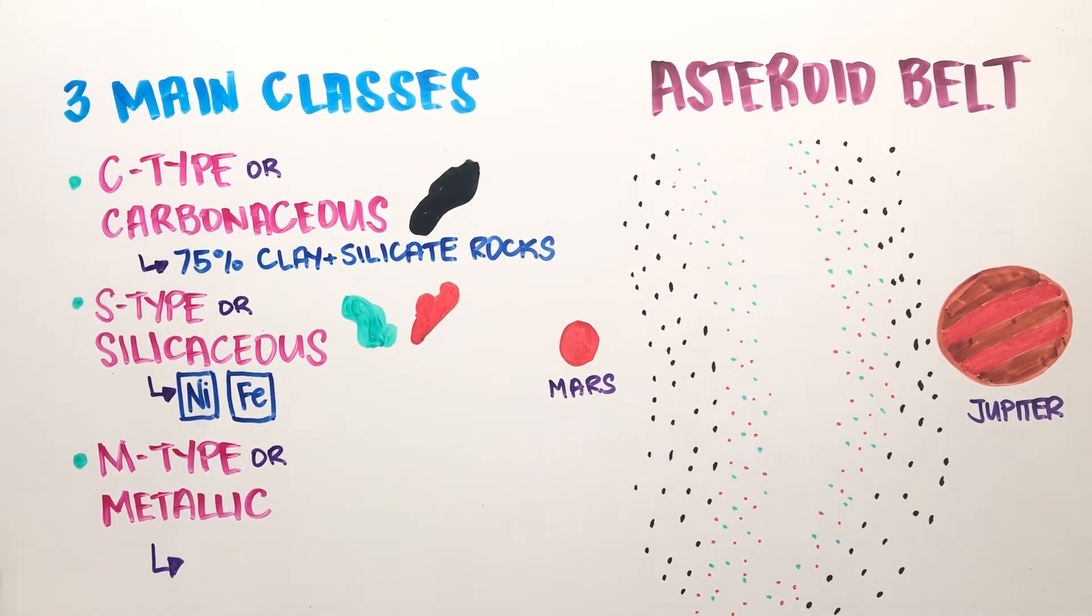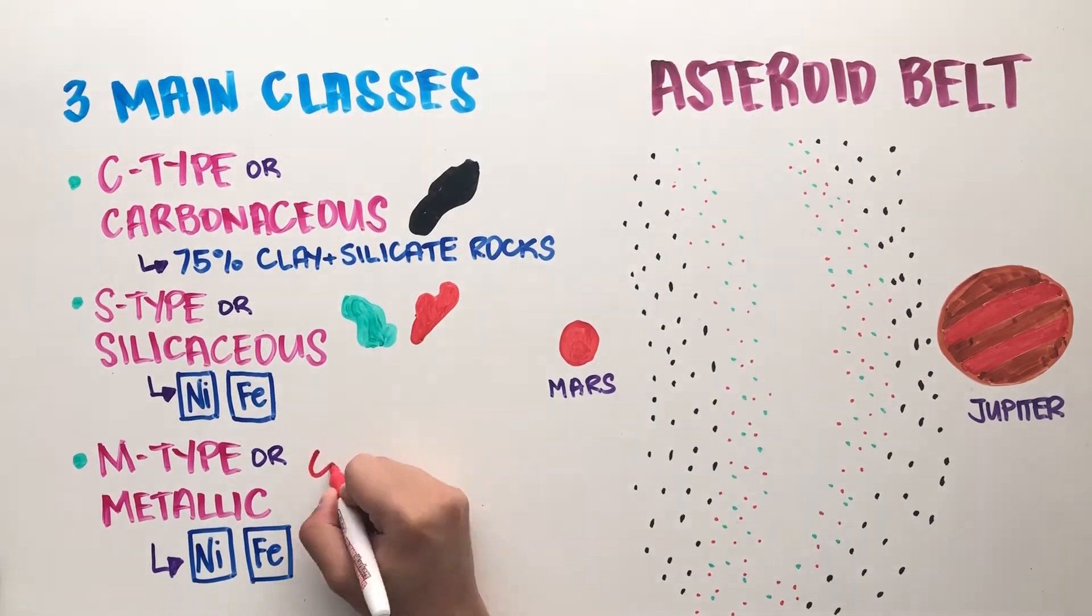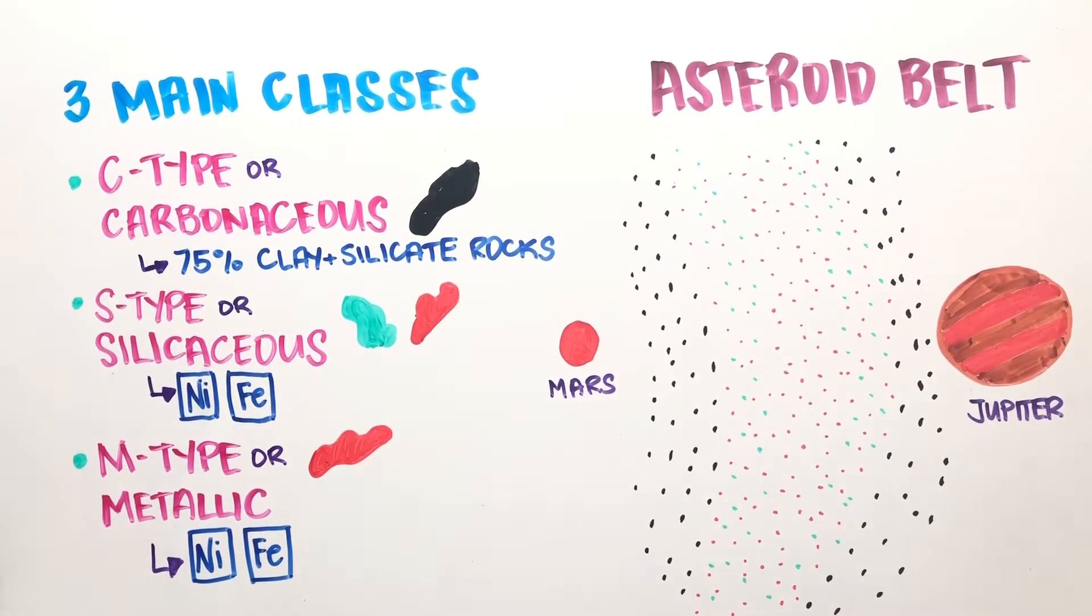M-type or metallic asteroids are made up of nickel iron and are reddish in color. They can be found in the middle region of the belt.